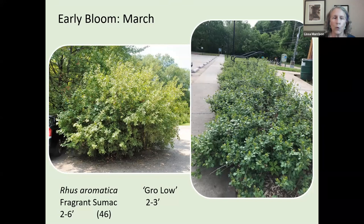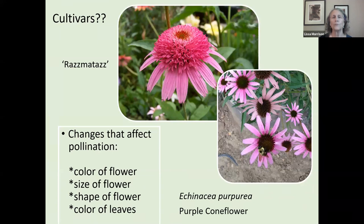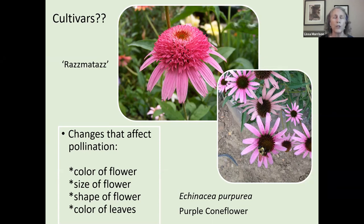I want to divert here to talk about cultivars. There is a lot of research happening about cultivars right now — it has only been studied seriously for the last 20 to 30 years. One thing becoming clear is that if we change the color, size, or shape of the flower too much, the pollinator insects cannot use that cultivar. The Razzmatazz purple coneflower is a great example.